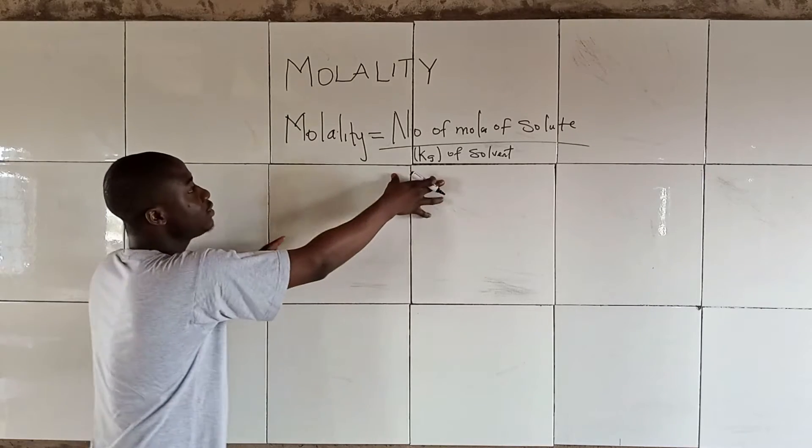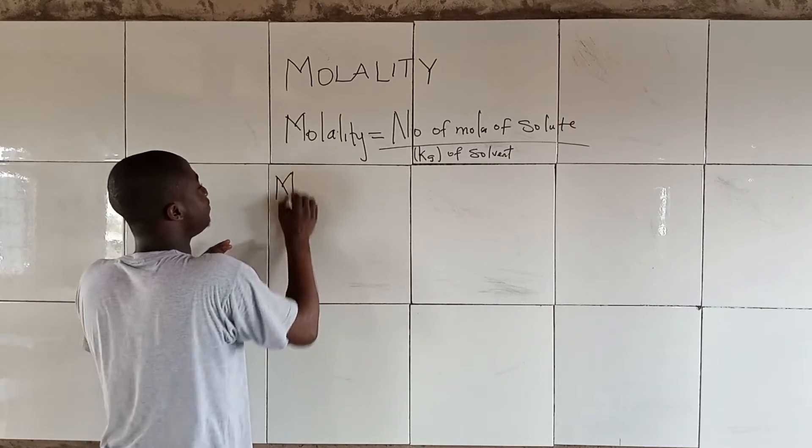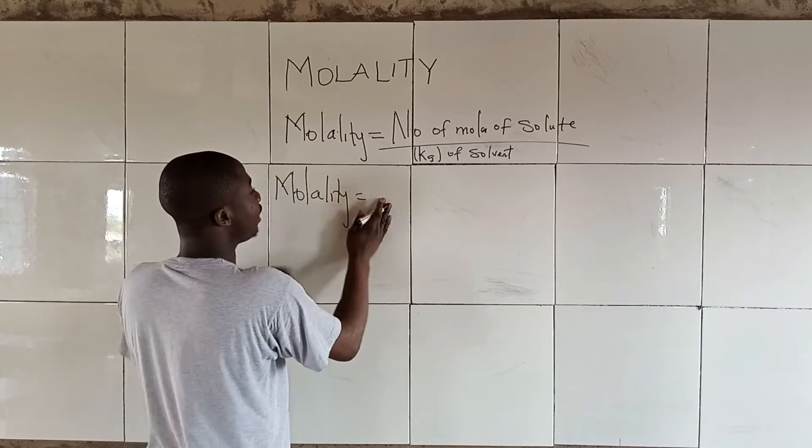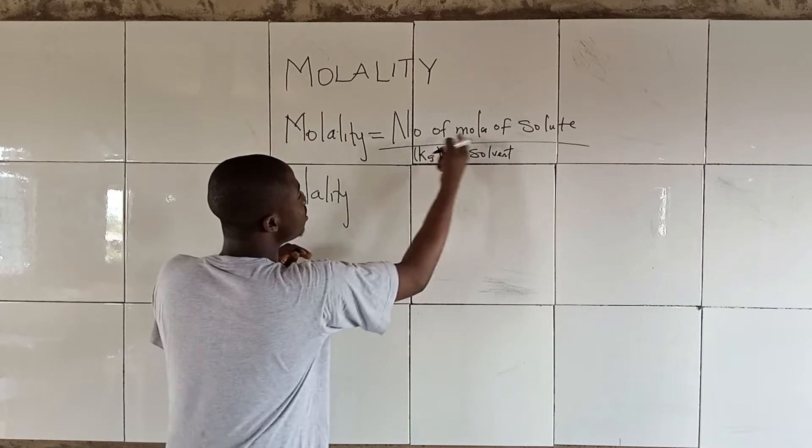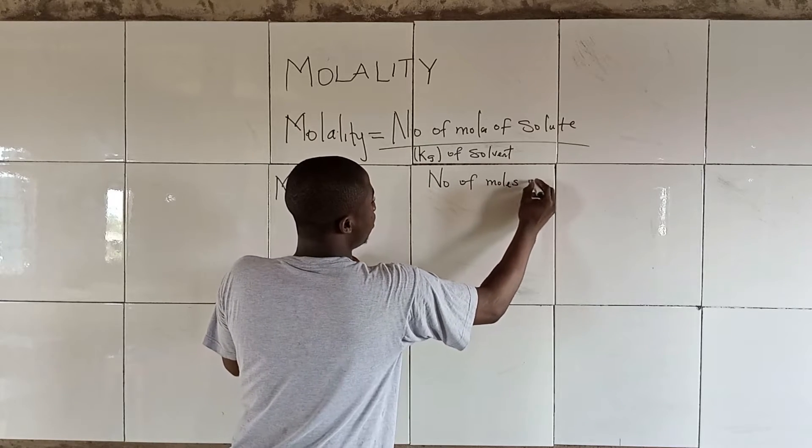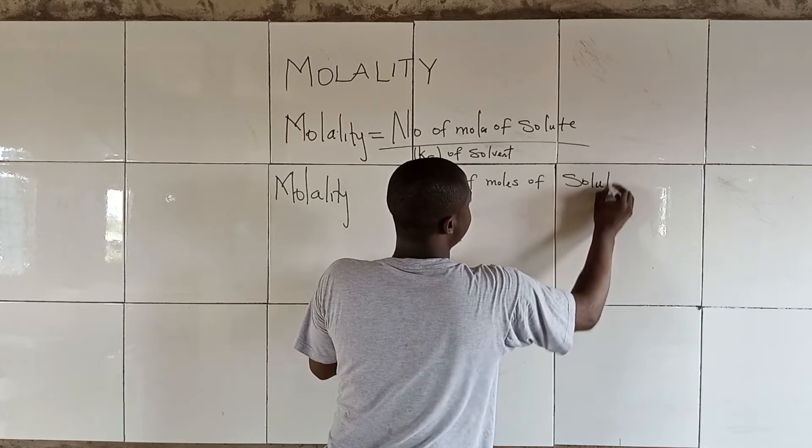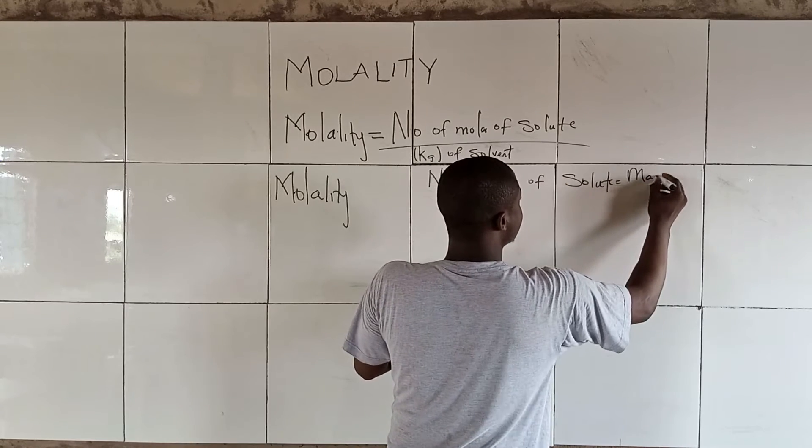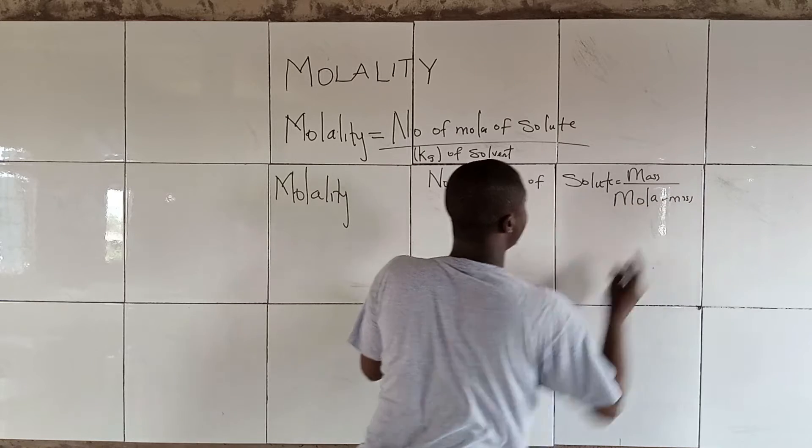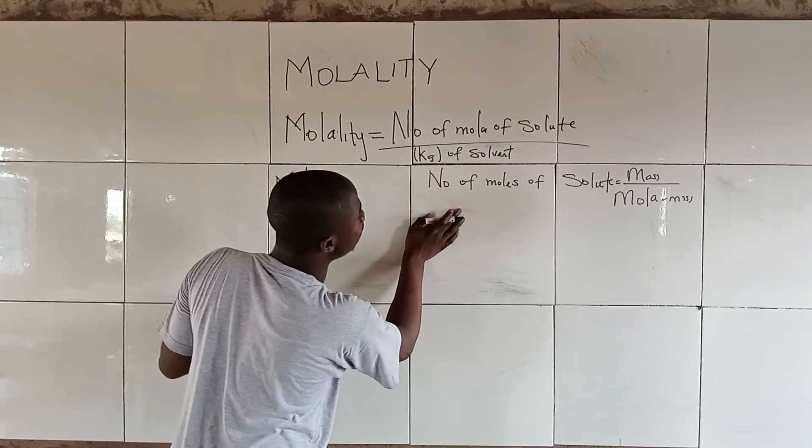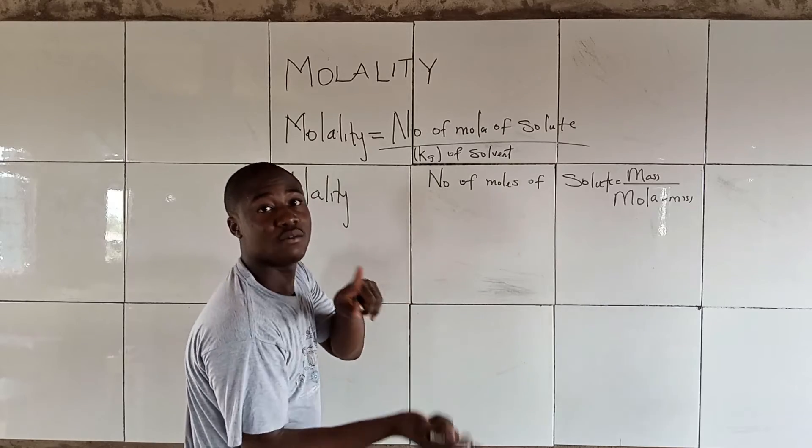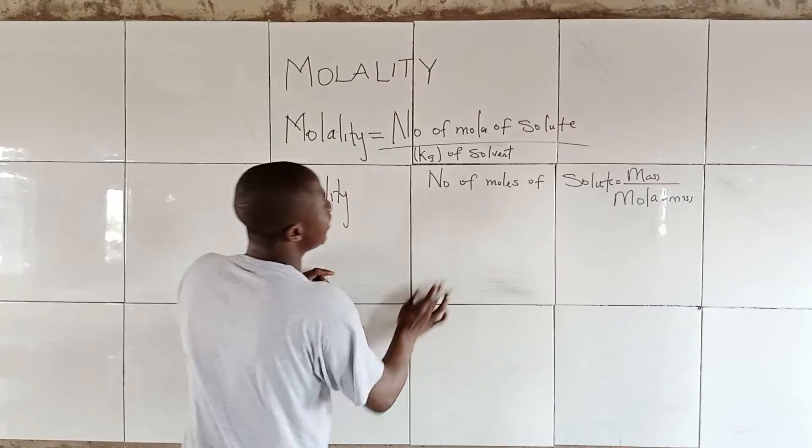Meanwhile, simplifying this formula, molality becomes something like this. What is number of moles of solute? It is given to be mass over molar mass. That is number of moles of solute, whereby kg of solvent is talking about the mass of the solvent.